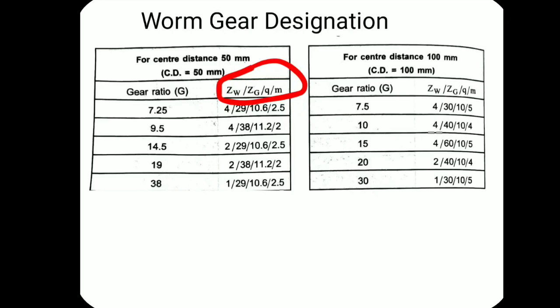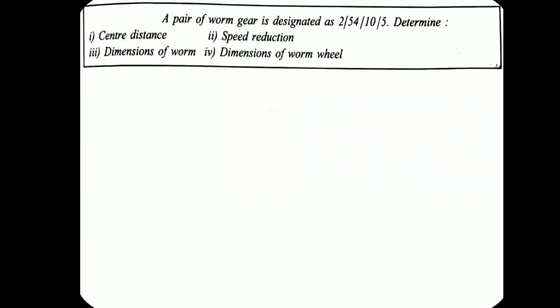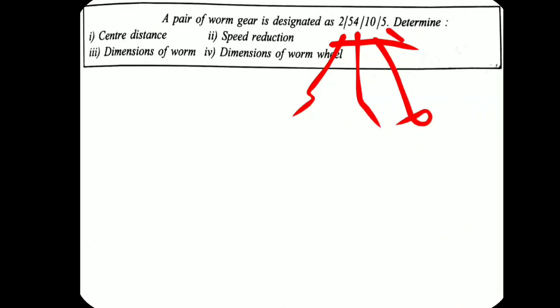You need to know what each digit indicates. Now I'll go to a numerical related to the terminology. A pair of worm gears is designated as 2 / 54 / 10 / 5. This means: zw = 2 (number of starts), zg = 54 (number of teeth on gear), q = 10 (diametral quotient), and m = 5 (module). These are the given data.